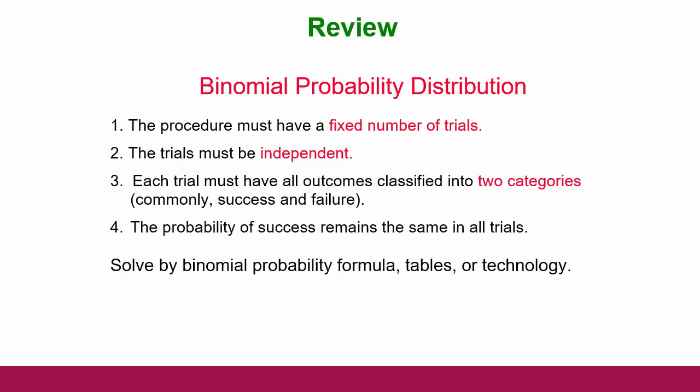Let's remind ourselves about the binomial probability distribution. In order for something to be a binomial probability distribution, it has to have the following things. First, the procedure must have a fixed number of trials — you have to have a sample size of n. All of those trials must be independent, meaning the probability of any trial having the characteristic you're testing for has to be consistent throughout.